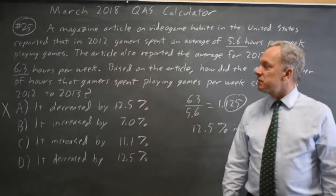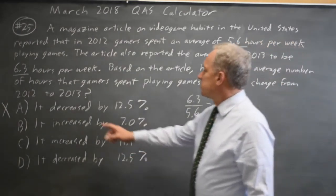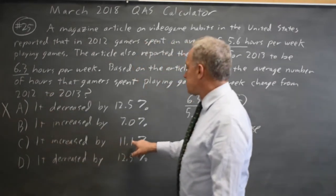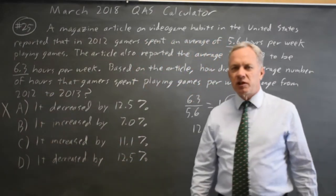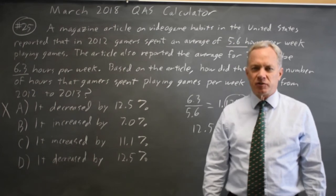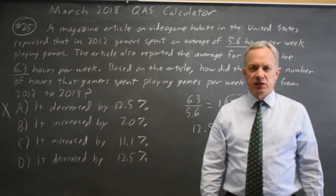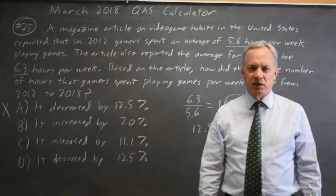If you had done this backwards, 2012 is 11.1% less than 2013 if you take 5.6 over 6.3. So always when you're doing percent changes, make sure you take the percent of the correct number — the number you're coming from is your denominator.